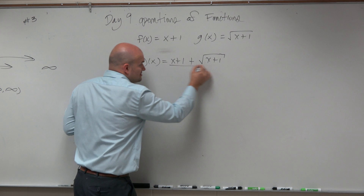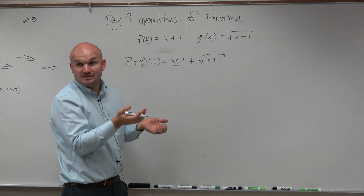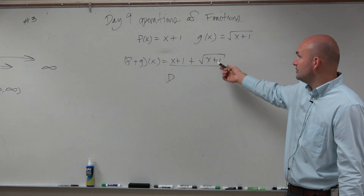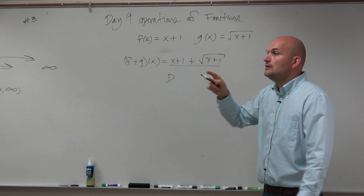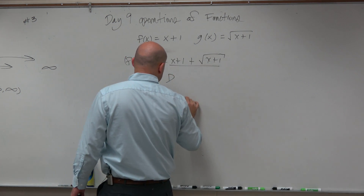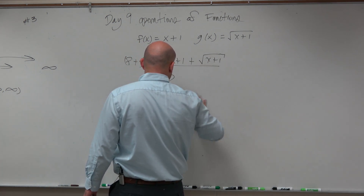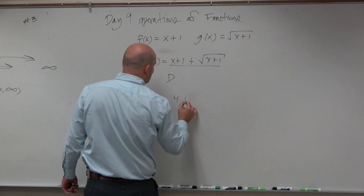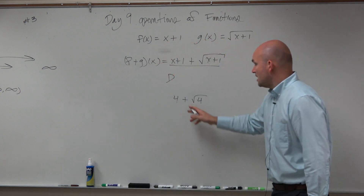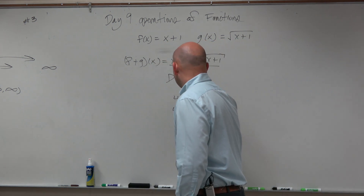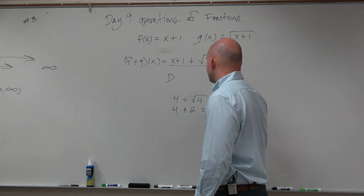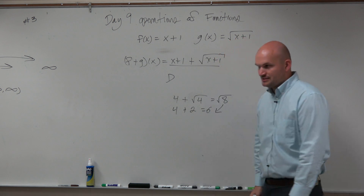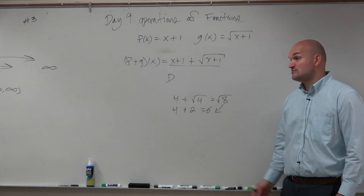That's your sum. Now let's go find the domain. There's nothing you can do to combine this. For example, 4 plus the square root of 4 — what is the square root of 4? It's 2. So the answer is 6. But if you said 4 plus 4 is the same as the square root of 8, is the square root of 8 the same thing as 6? No, so it doesn't work.